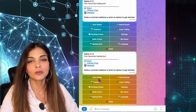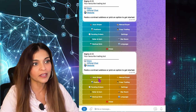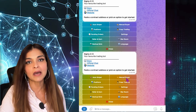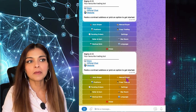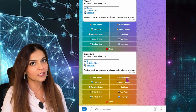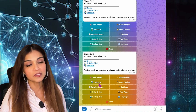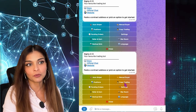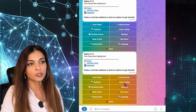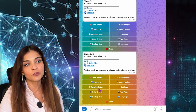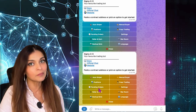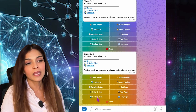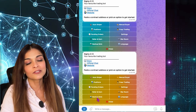Here you can see Auto Sniper — that is for tokens that have not been launched yet, so it's not live yet, but you can set up orders for as soon as it goes live. You have the Manual Buyer, which is simply buying and selling at record speed, much faster than Uniswap. Then you have Positions where you can see all the positions across all your wallets. Copy trading lets you copy other traders if you have their address. You have Pending Orders for any auto snipe or limit orders you've set. And you have Settings, Refer and Earn, and Backup Bots.